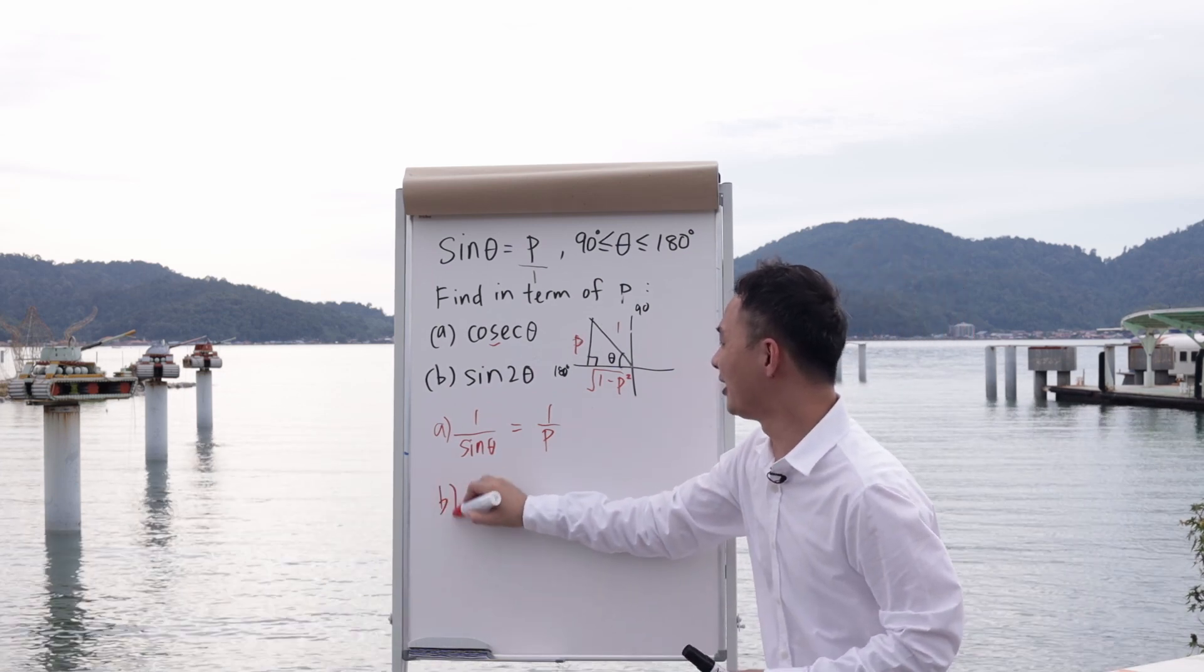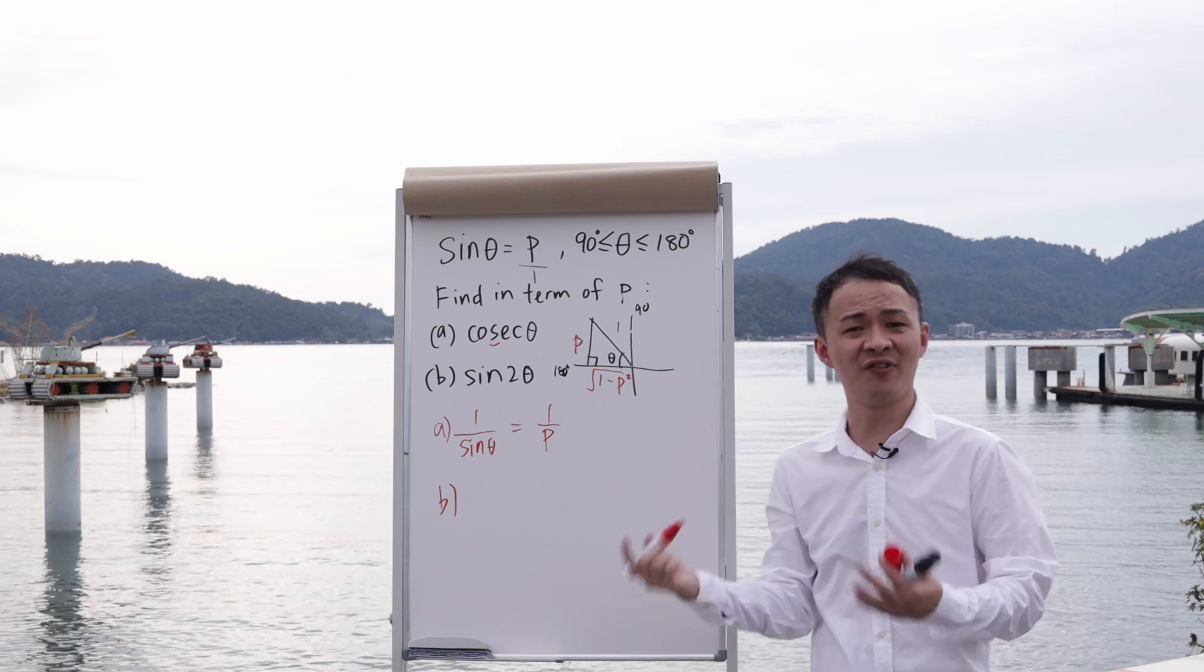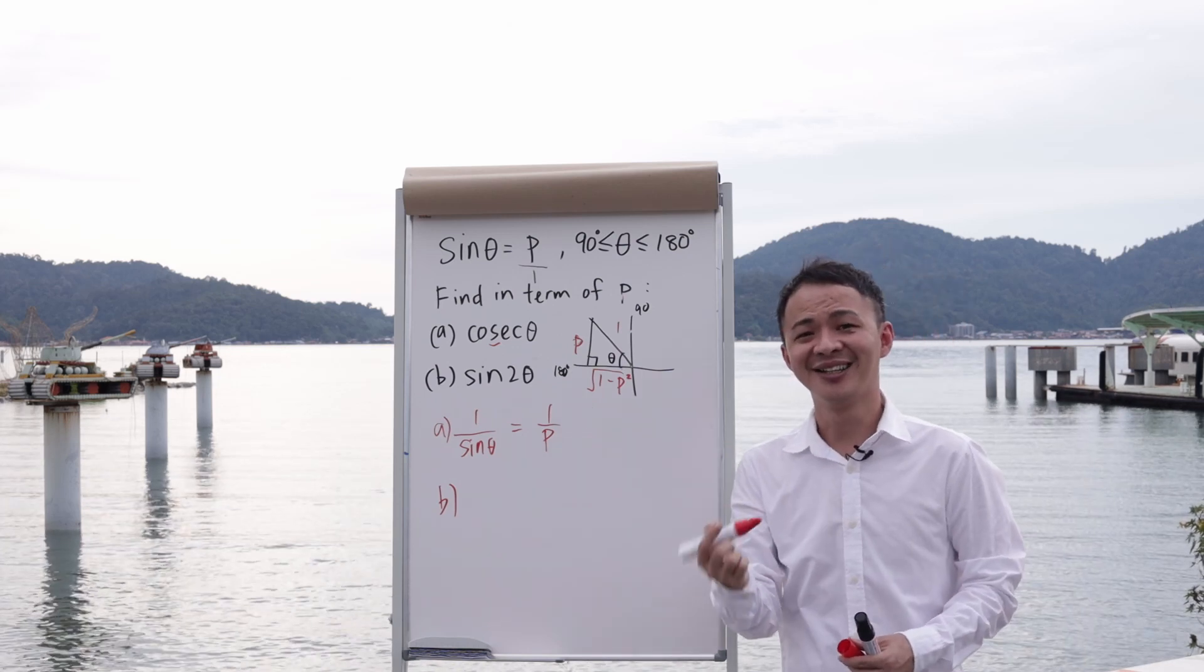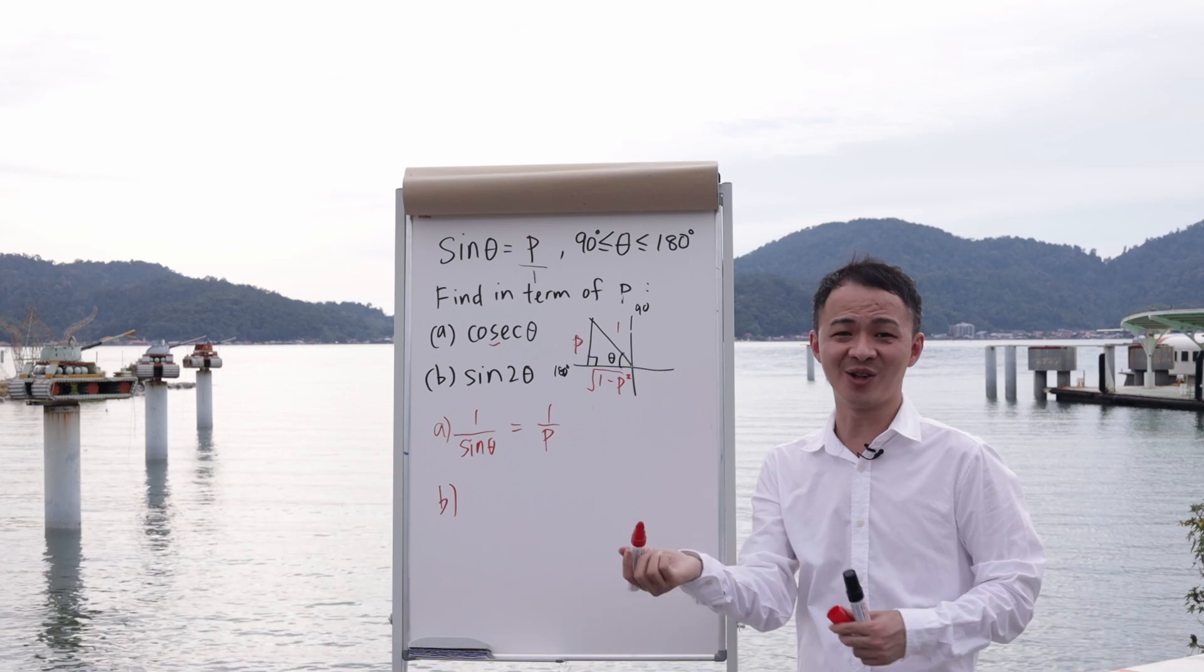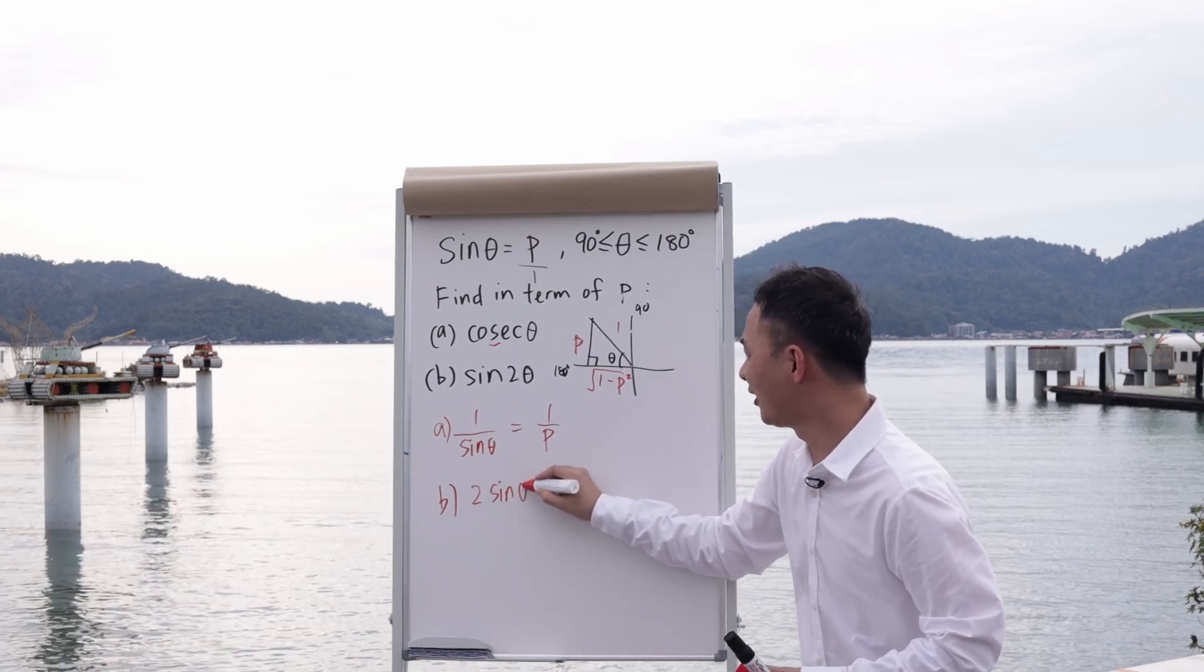For part B, you need to know the formula for sin 2θ. This is the double angle formula. Sin 2θ equals 2 sin θ cos θ. So I apply the formula: it's 2 sin θ cos θ.